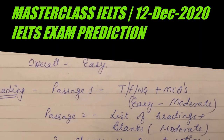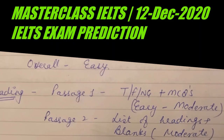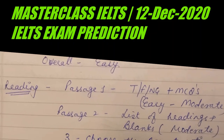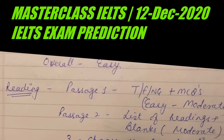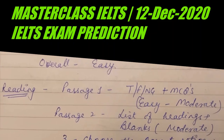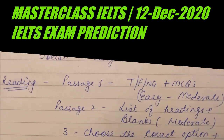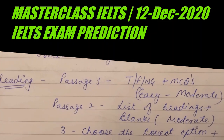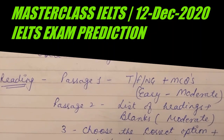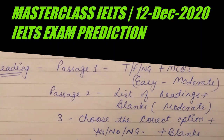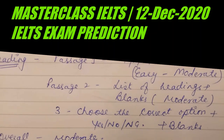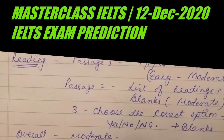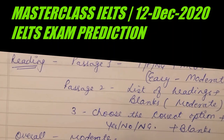Passage 2 will have list of headings plus blanks. List of headings is the most difficult question type, so you need to do it at the end — do the blanks first and then do the headings. In Passage 3, you have to choose the correct option from options A to F, plus Yes/No/Not Given and blanks. The level will be slightly moderate, and overall reading will be at a moderate level. You have to focus on synonyms and paraphrasing.